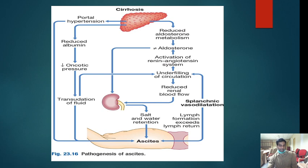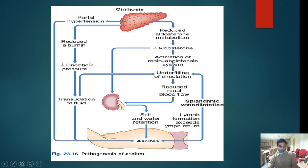The pathogenesis of ascites: the main reason is portal hypertension. In cirrhosis, albumin synthesis is reduced because the liver has no function. When albumin is reduced, oncotic pressure decreases, leading to transudation of fluid — causing ascites. This is one common cause.